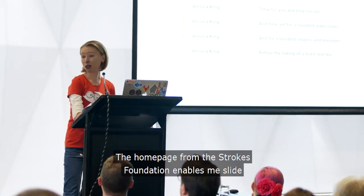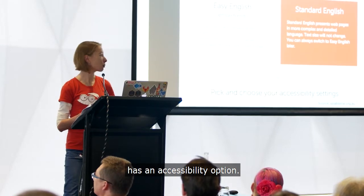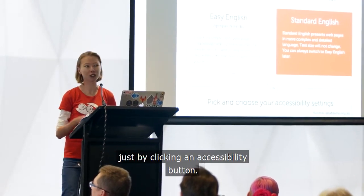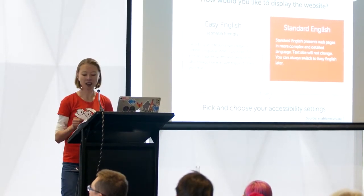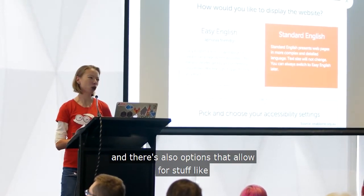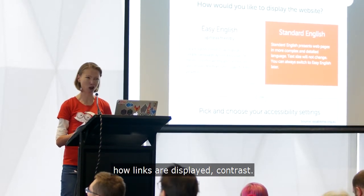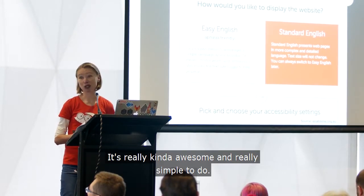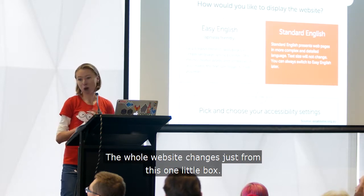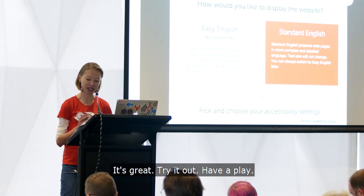The Strokes Foundation website has an accessibility option where users can choose how they want to see the page just by clicking an accessibility button. They can choose from Easy Read English and there are also options for how links are displayed and contrast. It's really awesome and really simple to do — the whole website changes just from this one little box. Try it out.